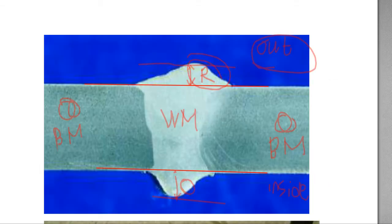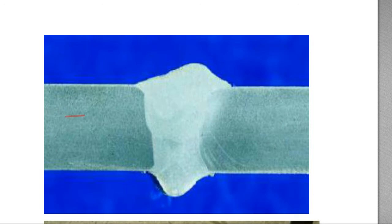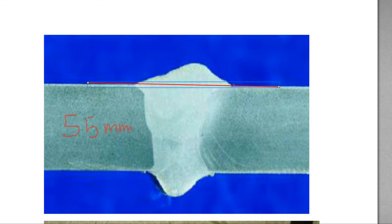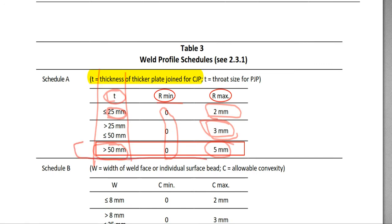For example, if the thickness is 55 millimeters, then the reinforcement acceptance criteria is 5 millimeters, because the last section says greater than 50 millimeters, the reinforcement maximum is 5 millimeters. So more than 5 millimeters is rejected — not acceptable.